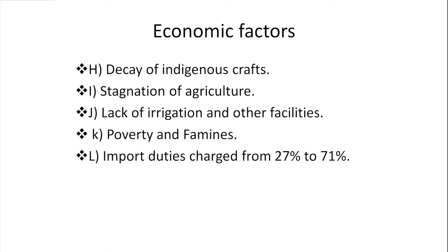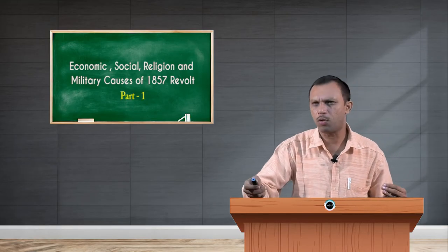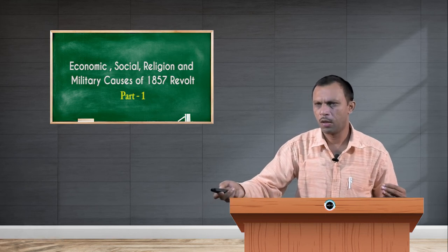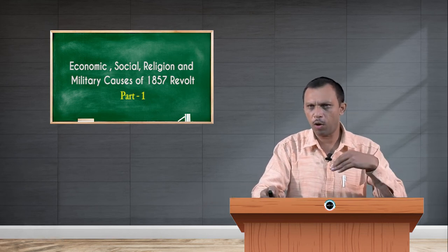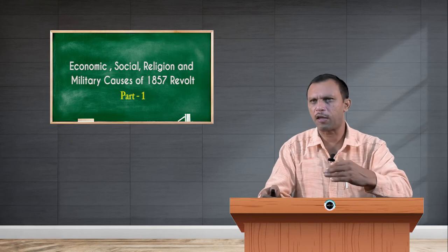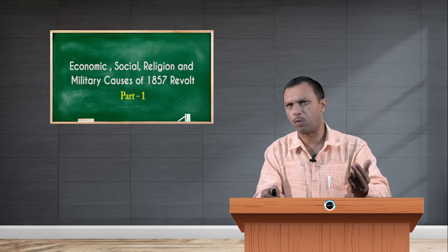Poverty and famines—import duties charged by British varied from 27 percent to 71 percent. These are the economic causes primarily responsible for the outbreak of 1857 revolt.